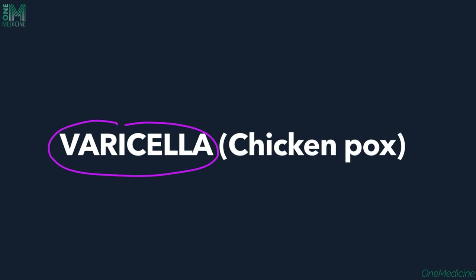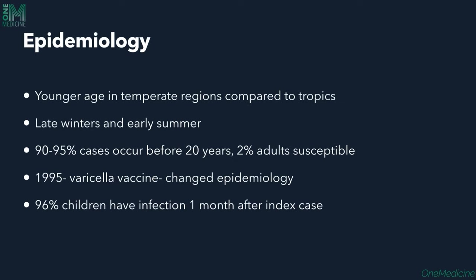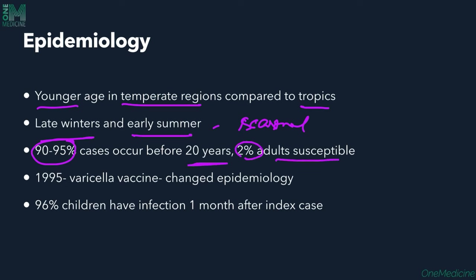Varicella, commonly called chicken pox, affects younger age groups and is more prevalent in temperate regions compared to the tropics. Seasonal variation shows late winters and early summers as peak periods. 90–95% of cases occur before 20 years of age and only 2% are seen in adults. In 1995, the Varicella vaccine was developed, changing the epidemiology. 96% of children develop infection one month after exposure to the index case.